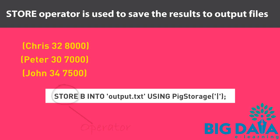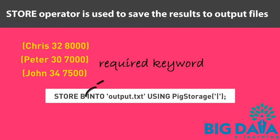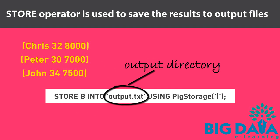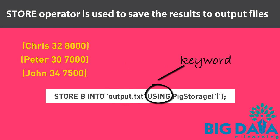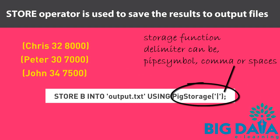Here, store is the operator. B is the name of the alias which contains the modified data. Into is a required keyword. Output.txt is the output directory, and the directory name is enclosed within single quotes. Note that if the output directory already exists, the PIG operation will fail. Using is the keyword used to specify the store function. Pig storage is the store function used when we need the fields to be delimited by pipe symbol in the output directory. You can use different delimiters as per the requirement.